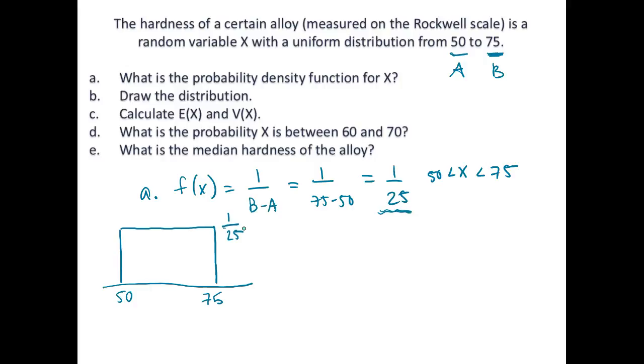So now how do we calculate the expectation and the variance of x? The expectation and variance of x, because this is a common distribution, all have the same form. The expectation is (b+a)/2. This is, of course, (75+50)/2, which is equal to 62.5.